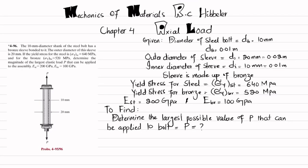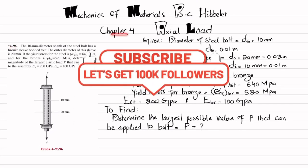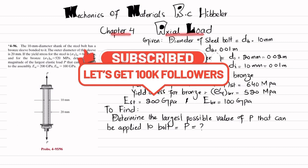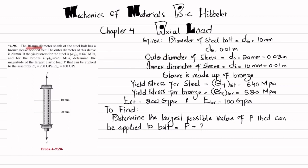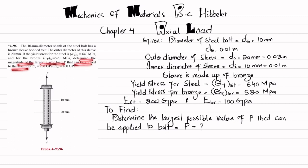Welcome back. Problem 4-96 is taken from Chapter 4, Axial Load, in the book Mechanics of Materials by R.C. Hibbeler. The statement is: the 10 millimeter diameter shank of a steel bolt has a bronze sleeve bonded to it. The outer diameter of this sleeve is 20 millimeter. The yield stress for steel is 640 megapascal, for bronze is 520 megapascal. The modulus of elasticity for steel is 200 gigapascal and for bronze is 100 gigapascal.